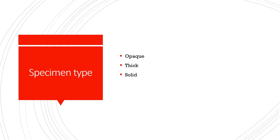The specimens to be used in a stereoscopic microscope should be opaque, thick, and solid.